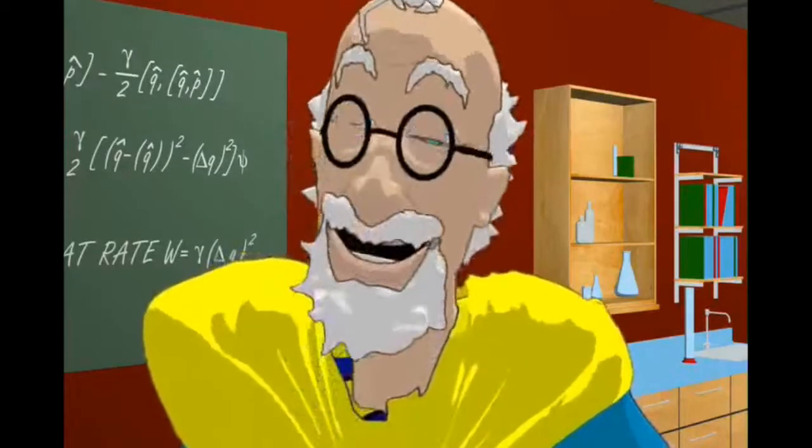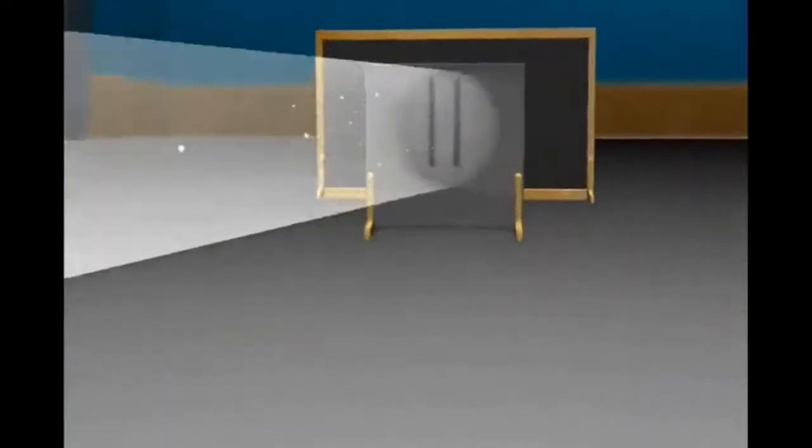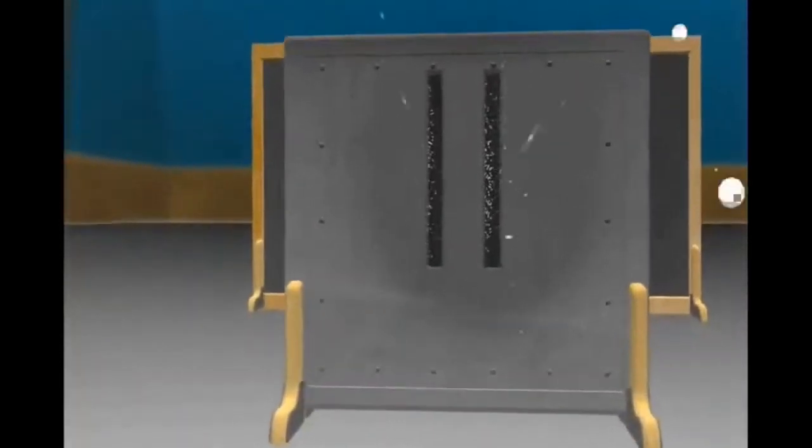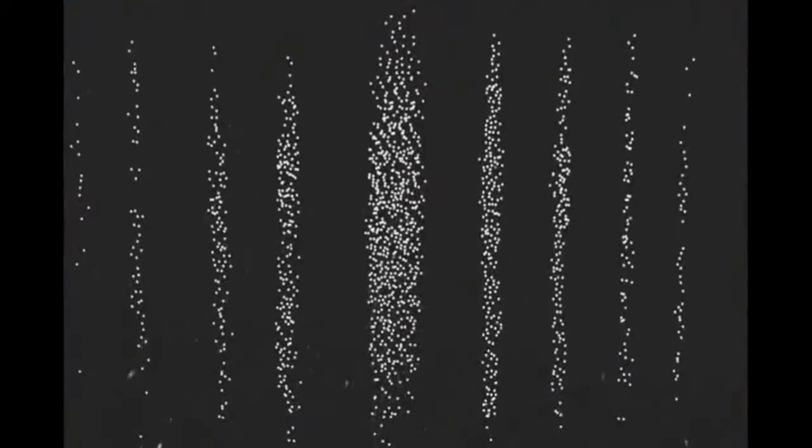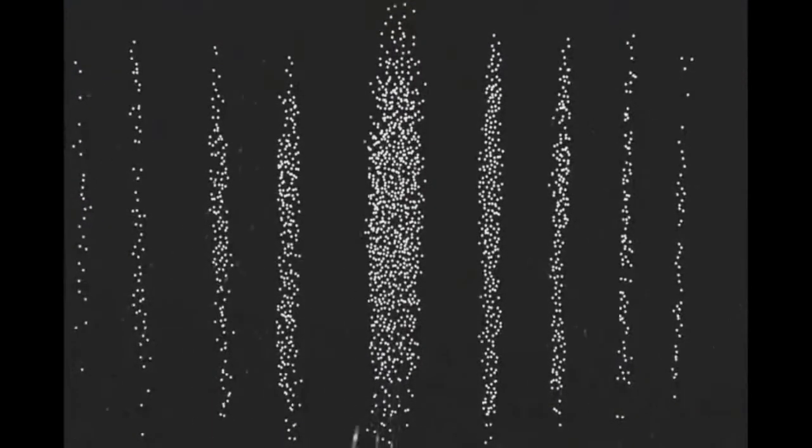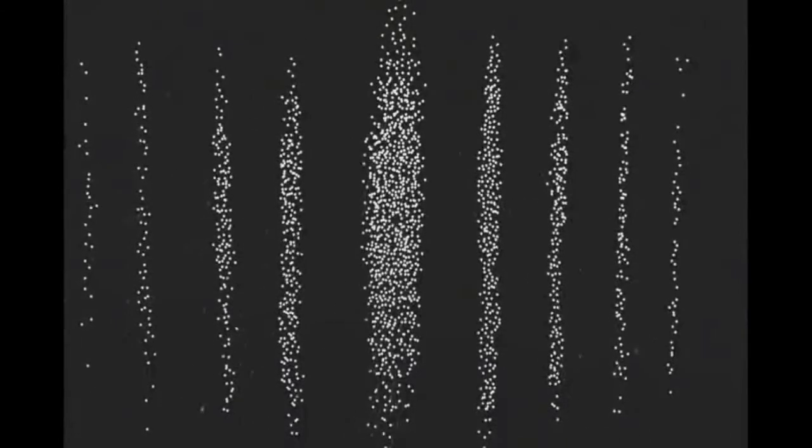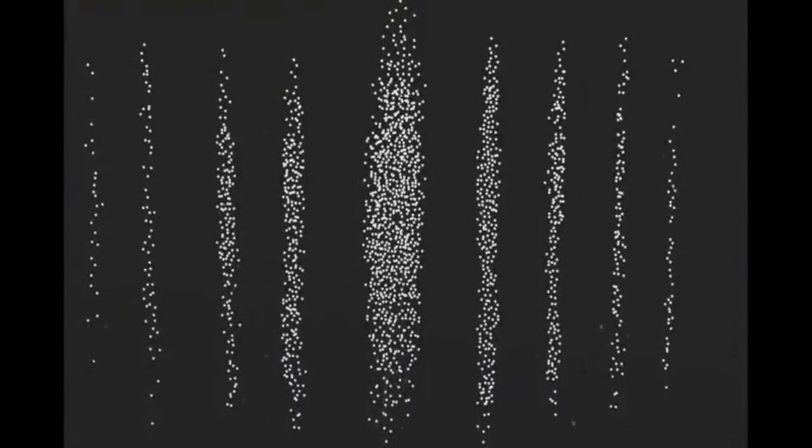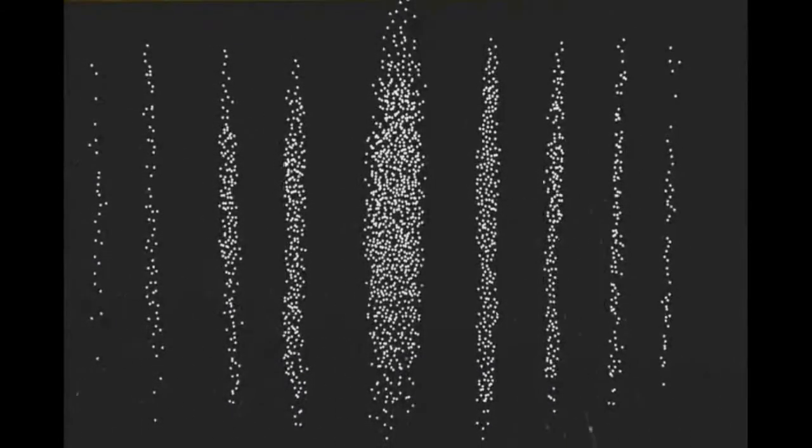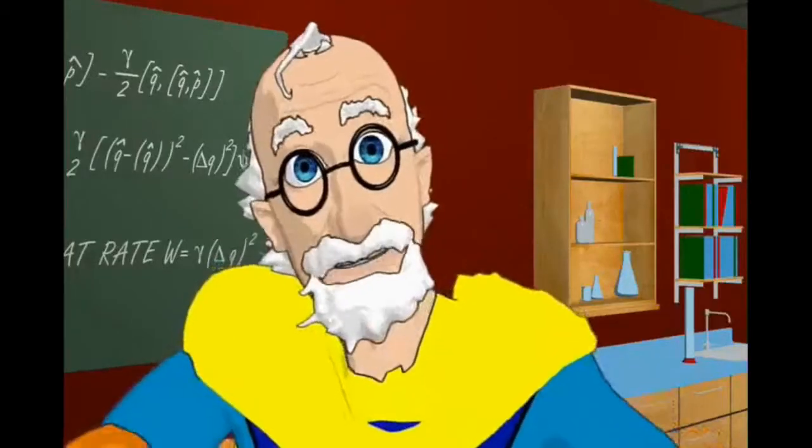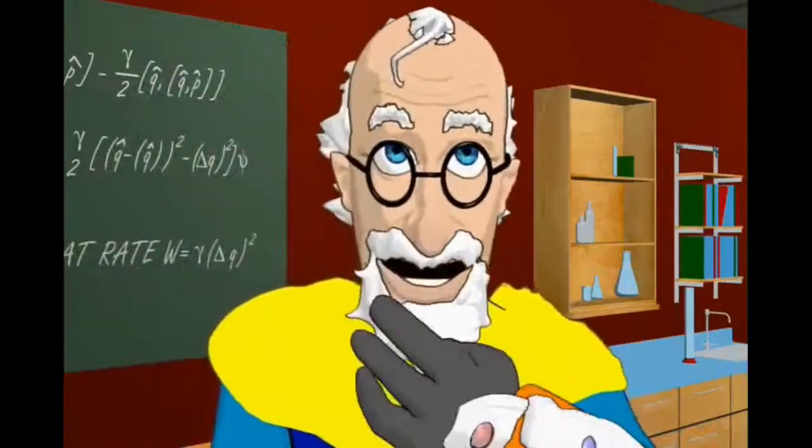What? An interference pattern. We fired electrons, tiny bits of matter, through. But we get a pattern like waves. Not like little marbles. How? How could pieces of matter create an interference pattern like a wave? It doesn't make sense. But, physicists are clever. They thought, maybe those little balls are bouncing off each other and creating that pattern.